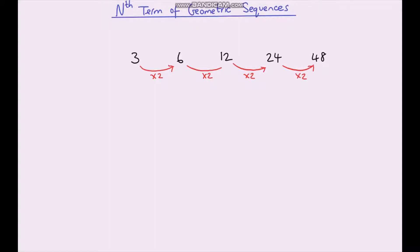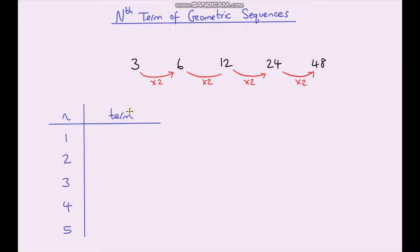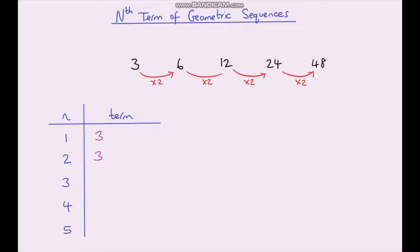What we're going to do is come up with a rule so that we can work out any term in this sequence. I've got a table where the first column has values for n — the position numbers: first term, second term, third term, etc. In the second column I'm going to write down the term values. The first term when n equals one is just three. The second term is our first term multiplied by two.